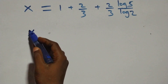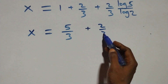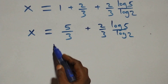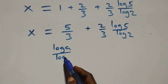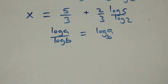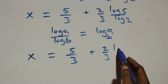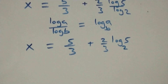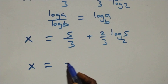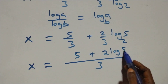We apply the change of base rule: log 5 over log 2 is the same as log base 2 of 5, written as log₂5. So x equals 1 plus 2 over 3 plus (2 over 3) log₂5. Combining as a single fraction over 3, we get x equals (5 + 2 log₂5) over 3.